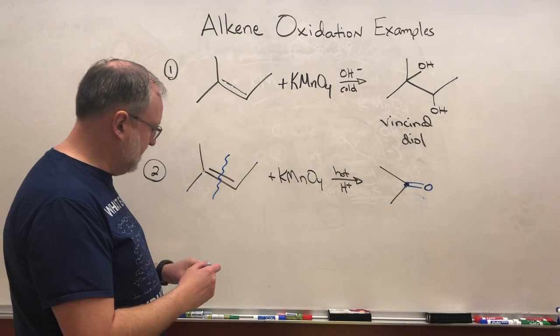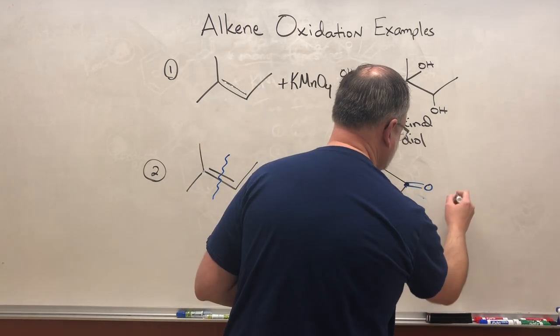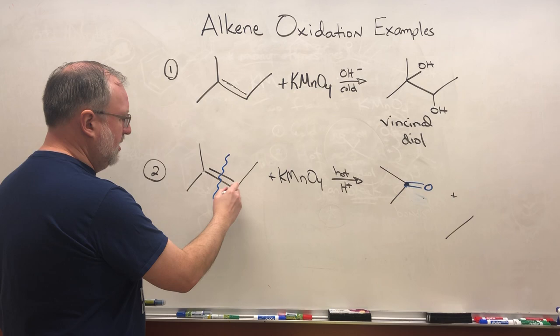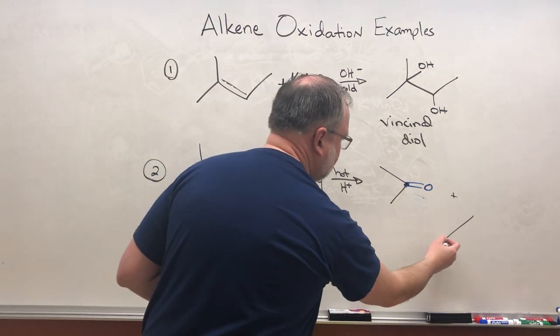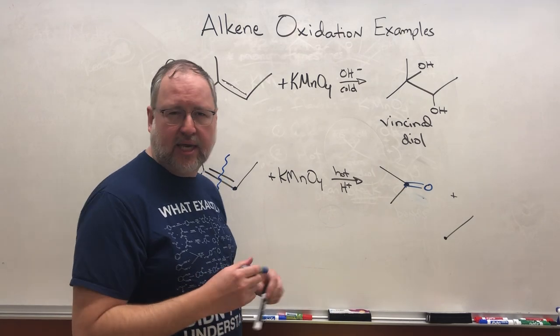So for a carbon that's already a secondary carbon, once this thing breaks off, that becomes a ketone. What about the other piece? If you look at these two carbons here, this carbon is also going to be oxidized as far as it can go, but it's a primary carbon. If you have a primary carbon, what is the most oxidized it can be?